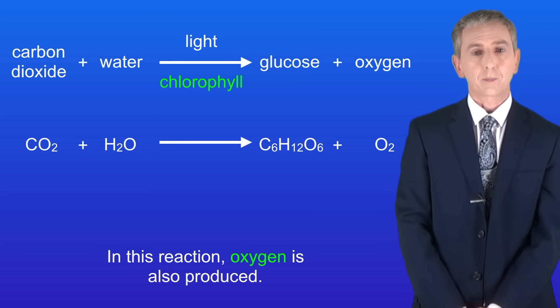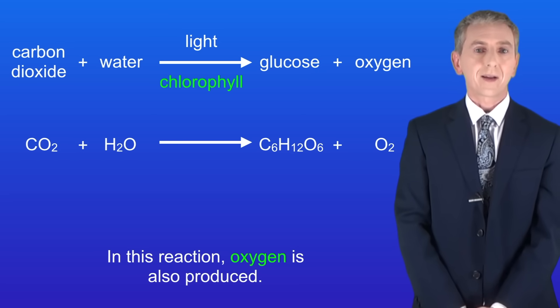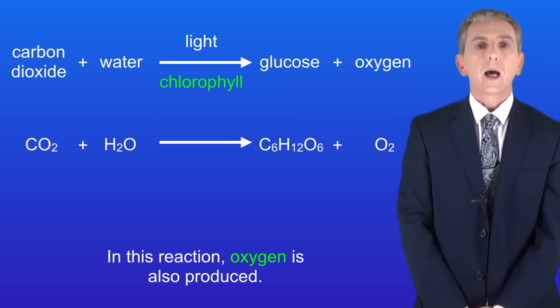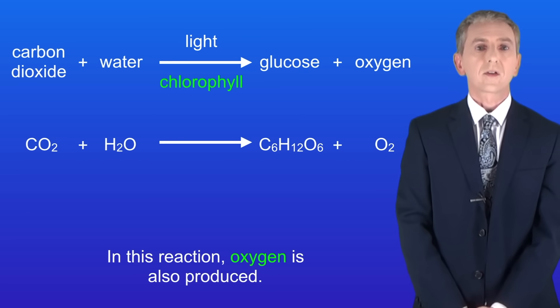Now I should point out that this equation isn't balanced but you're not required to balance it for your exam. As we saw before, in order for photosynthesis to take place we need carbon dioxide and light. So the question is what happens if there's not enough of these? We're going to look at that now.